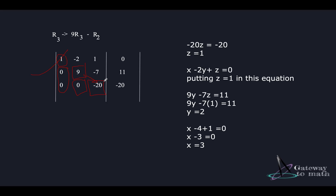Now that the matrix is in row echelon form, we can compute the values of all variables. The last equation gives −20Z = −20, so Z = 1. Substituting back gives 9Y − 7Z = 11, so Y = 2. Then X − 2Y + Z = 2, so X = 3. We've found the solution of these linear equations by reducing the matrix. There are other methods to solve linear equations — by substitution or other approaches — but representing them as matrices is a very handy tool.